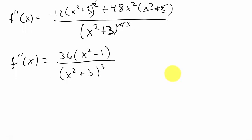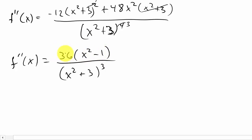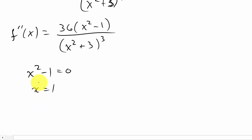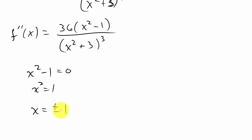So that's our second derivative. We set it equal to zero and solve for x. A fraction is zero when the numerator is zero, so we set the numerator equal to zero: 36(x squared minus 1) equals zero. The 36 doesn't affect the solution, so x squared minus 1 equals zero, giving x squared equals 1, so x equals plus or minus the square root of 1, which is plus or minus 1.